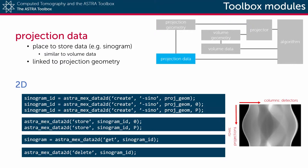For 2D projection data, each column of the projection data refers to a single detector, and each row of the projection data refers to a single projection.